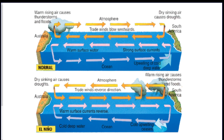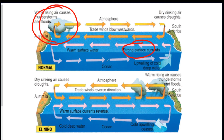Here's another picture. You can see the strong current is going to bring clouds over here, and then if it's weaker, there is drought over there. Depending on the wind strength, you're going to get different climatic situations near Australia.